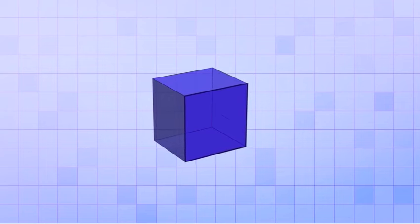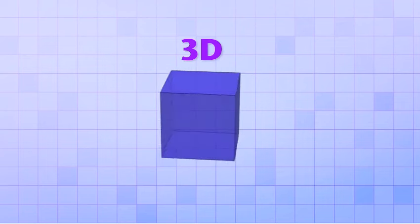Okay, now imagine that we take that 2-dimensional square and move in a direction perpendicular to its surface by a distance of 1 centimeter. It forms a 3-dimensional object that's called a cube.